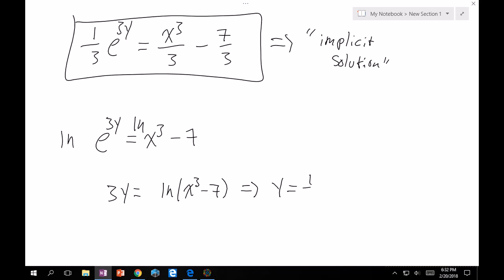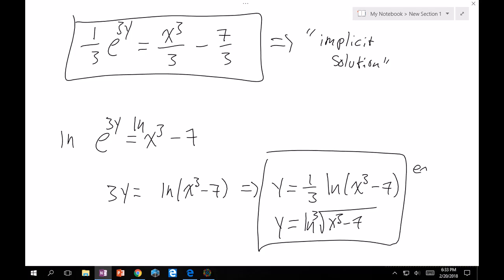And if you really want to impress me, y is equal to 1 third natural log of x cubed minus 7. Either one of these is an explicit solution.